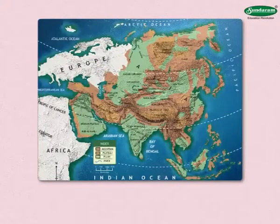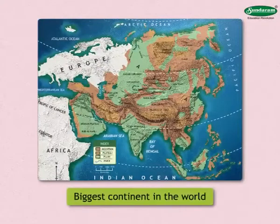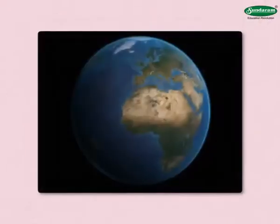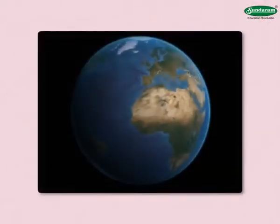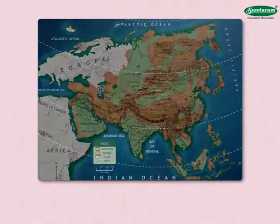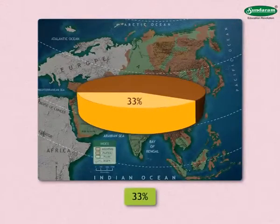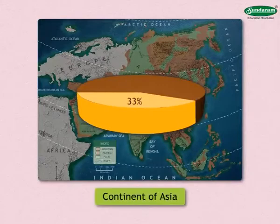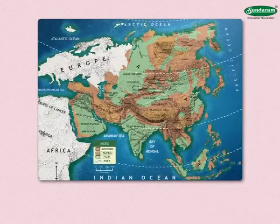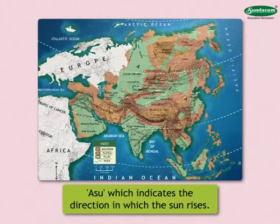The continent of Asia is the biggest continent in the world. Out of the total land area of the earth, about 33% is occupied by this continent. The continent derives its name, Asia, from the word Asu, which indicates the direction in which the sun rises.